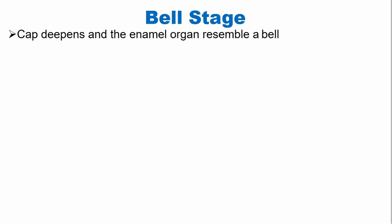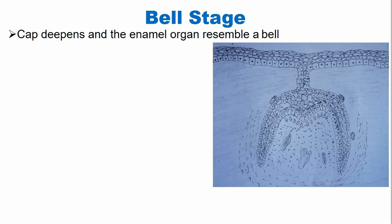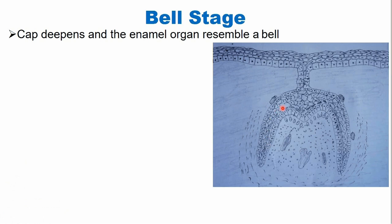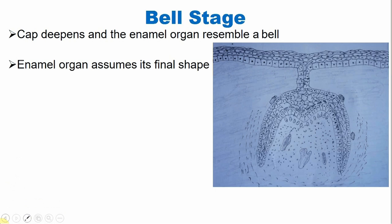In the bell stage, the cap deepens and the enamel organ resembles a bell-shaped structure. In the cap stage, the shape of the enamel organ is like a cap, but in the bell stage, because of continuous cell divisions, the enamel organ assumes the shape of a bell. Now the enamel organ assumes its final shape, and this is known as morpho-differentiation — morphologically, it is not going to change its shape.